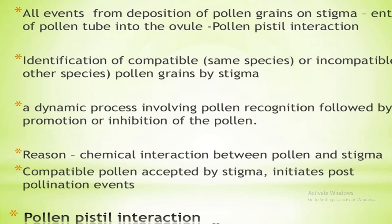The first step is recognition of compatible pollen. The pistil has the ability to recognize and accept the right or compatible pollen of the same species, and to reject pollen grains that are incompatible, either of the same species or of other species. It is the result of continuous dialogue mediated by chemical components of the pollen interacting with those of the pistil. After recognition of the correct pollen, the pistil promotes post-pollination events that lead to fertilization.